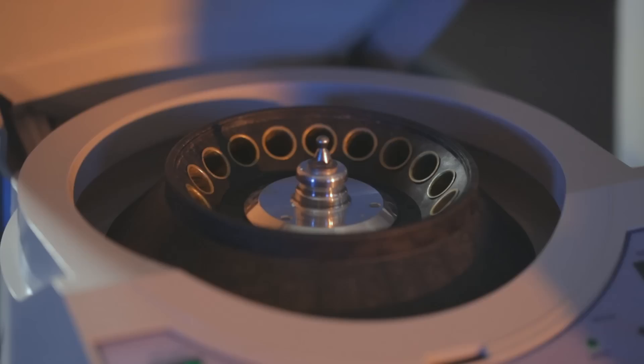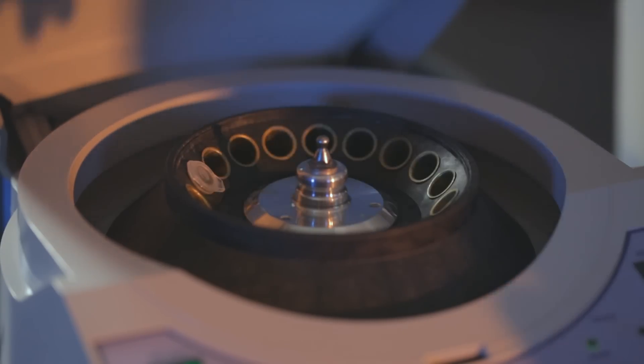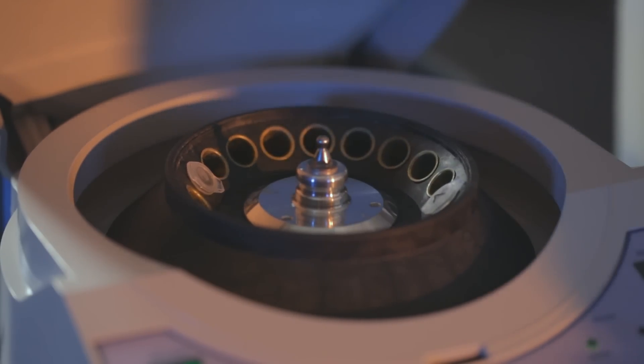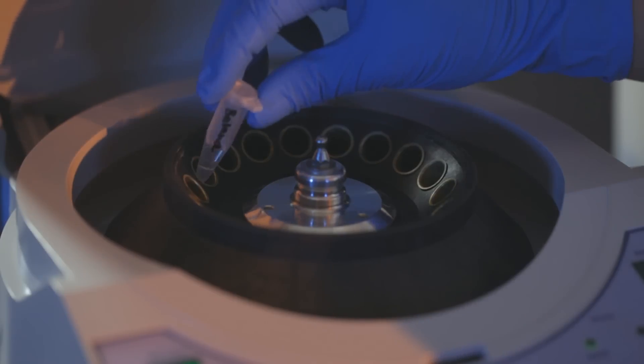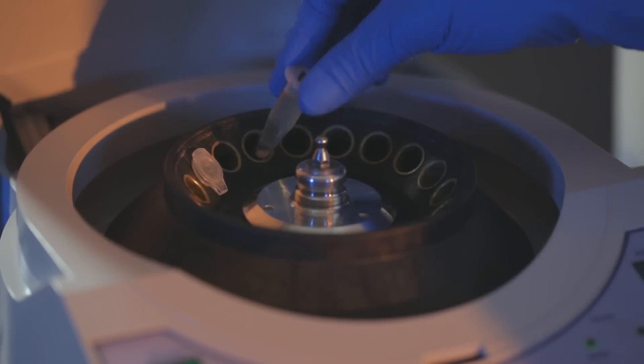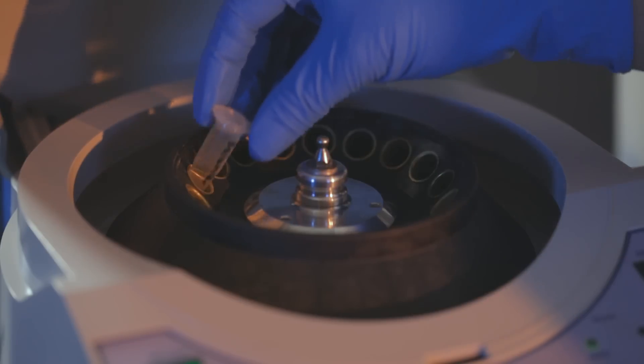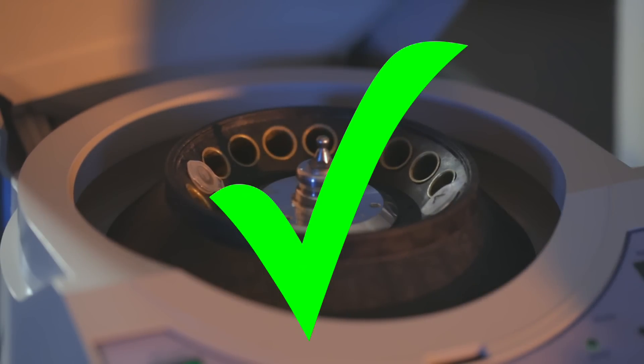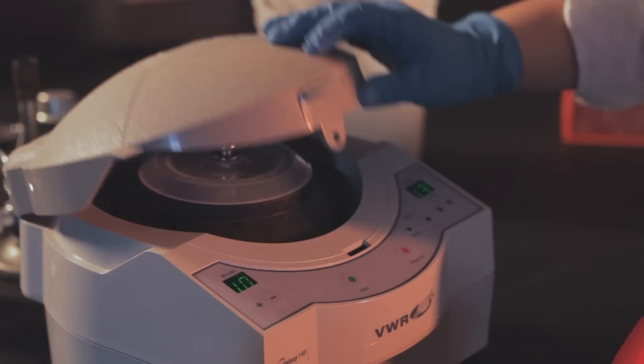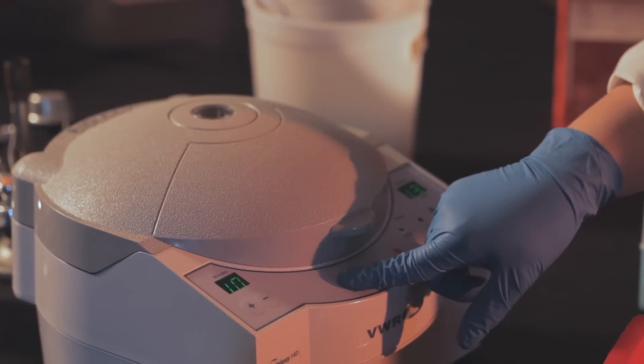You will now harvest the bacterial cells from the culture by centrifugation. Place the microfuge tubes in a tabletop microcentrifuge and spin for one minute at full speed. Be sure to balance the centrifuge before starting it. This means that an identical tube containing an identical volume of solution should be directly across from your tube. Don't forget to secure the inner lid if your centrifuge requires one.